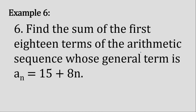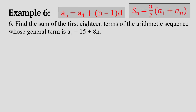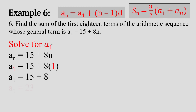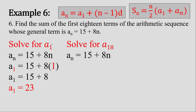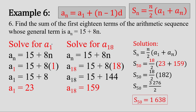Example number 6. Find the sum of the first 18 terms of the arithmetic sequence whose general term is a sub n equals 15 plus 8n. It seems difficult, but this is actually the easiest question among the problems we tackled today. All we need to do is compute for a sub 1 and a sub 18. For the first term, substitute n equals 1 into the formula to get 23. For the 18th term, substitute n equals 18 to get 159. Using the arithmetic series formula, the sum of the first 18 terms is 1,638.